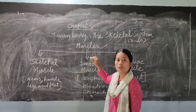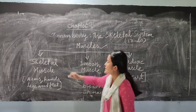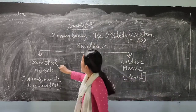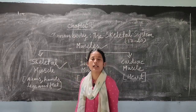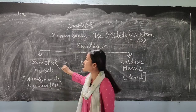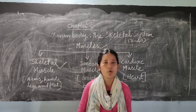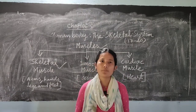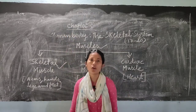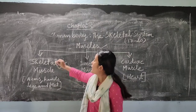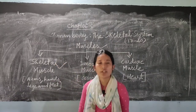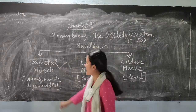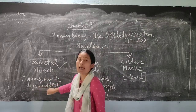There are three types of muscles: skeletal muscles, smooth muscles, and cardiac muscles. Skeletal muscles are attached to the bone and bring about voluntary action in our body. Voluntary action means those actions which are under our control — for example, raising your hand. Skeletal muscles are present in arms, hands, legs, and feet.